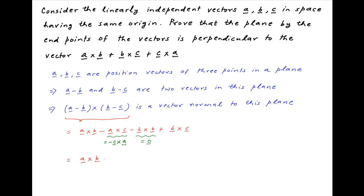Therefore, a vector normal to this plane is equal to A cross B plus C cross A plus B cross C, which is the required result.